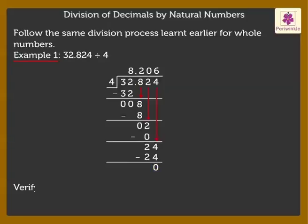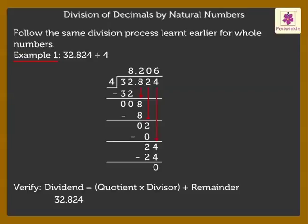To verify the answer, use the formula: dividend is equal to quotient into divisor plus remainder. Here, we get 32.824 on multiplying 8.206 by 4.